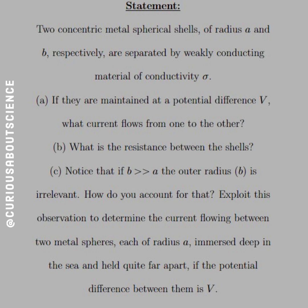Part C: Notice that if B is much, much greater than A, the outer radius B is irrelevant. How do you account for that? Exploit this observation to determine the current flowing between two metal spheres, each of radius A immersed deep in the sea, and held quite far apart if the potential difference between them is V.